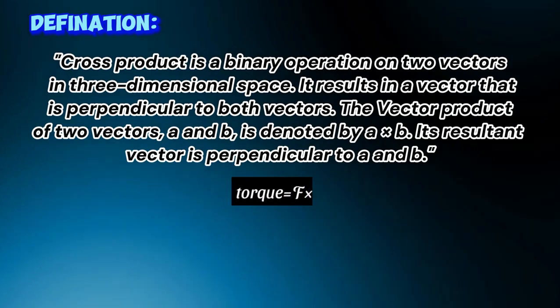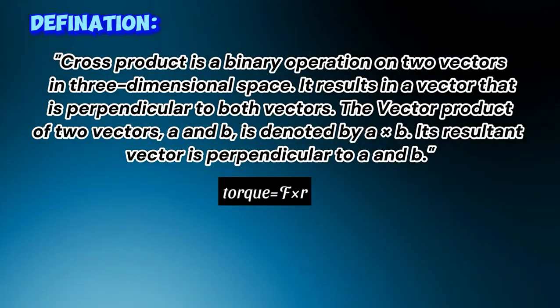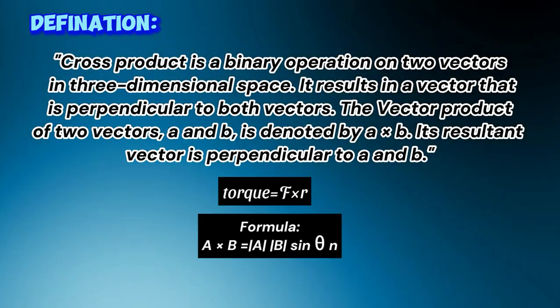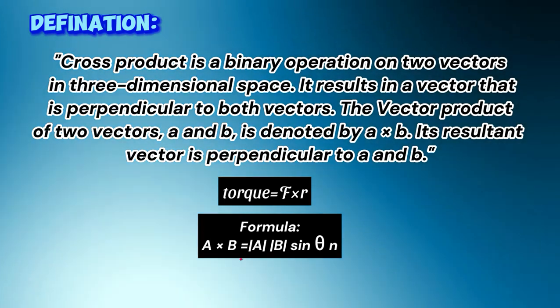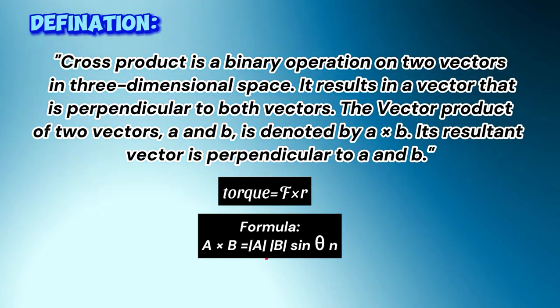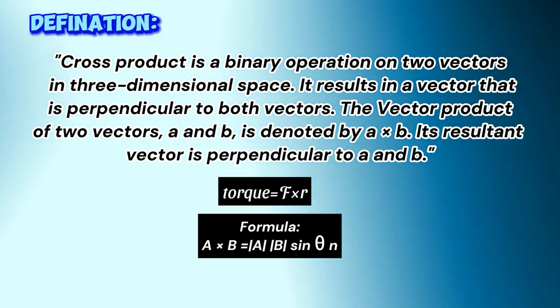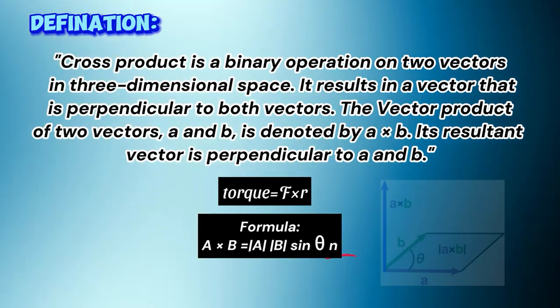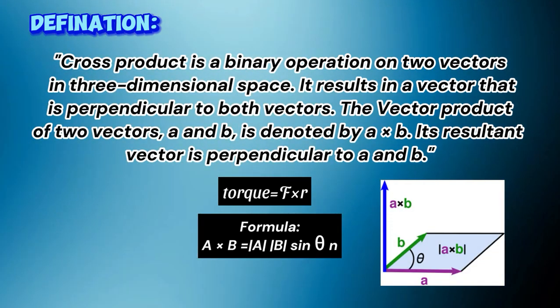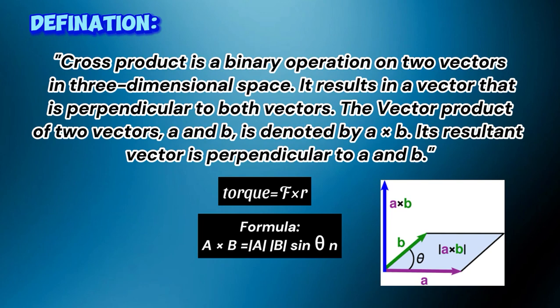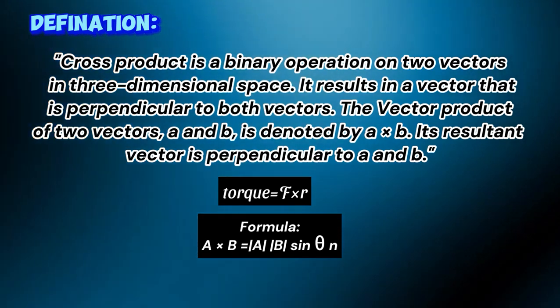For example torque represents the cross or vector product. a times b equals a b sine theta. a is the magnitude of vector a, b is the magnitude of vector b, theta is the angle between them, and unit vector n represents the direction perpendicular to the plane containing the two vectors. We can find its direction by right-hand rule which we will discuss in next section of the video.